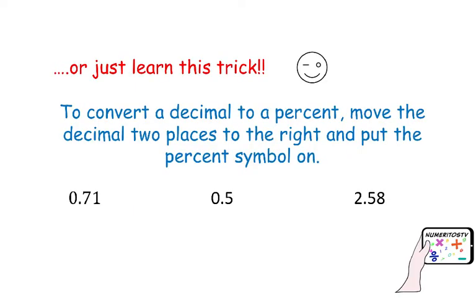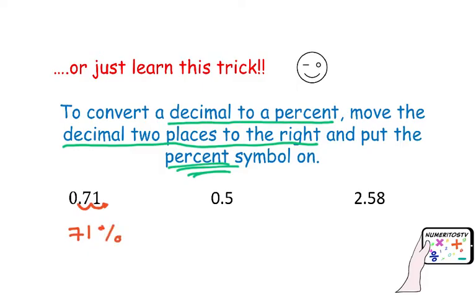Or, you can just learn this trick. To convert a decimal to a percent, you just need to move the decimal point two places to the right, and then put the percent symbol on. So, you can also use this trick instead of doing that much calculation. So, let's try with these examples. How do I convert 0.71 or 71 hundredths to a percent using this trick? I am going to move this decimal point twice to the right. So, the decimal point now is after 1. So, that means 71 wholes. And then, you just include the percent symbol.